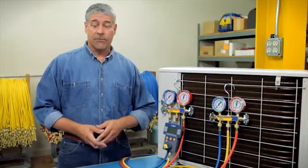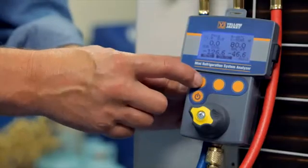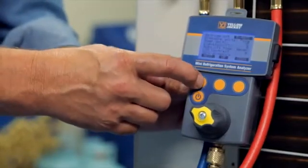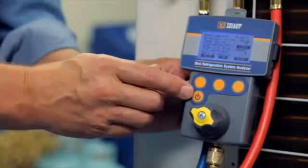To get the most accurate refrigerant PT data, you'll also need to select the elevation. Elevation is the third option on the menu screen. Once you've reached the number that's closest to your elevation level, press next to set.